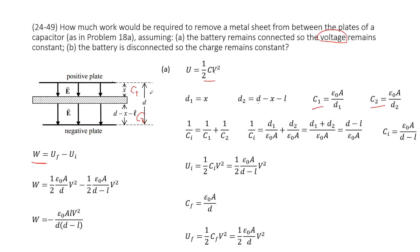We consider C1 and C2 as a series connection, so the equivalent initial capacitance C_initial must satisfy the series capacitance equation. We solve this equation by inputting C1 and C2, and we get the function for C_initial. Then the initial electric energy is one-half times C_initial times V squared. Inputting C_initial, you get the expression for the initial energy U_i.